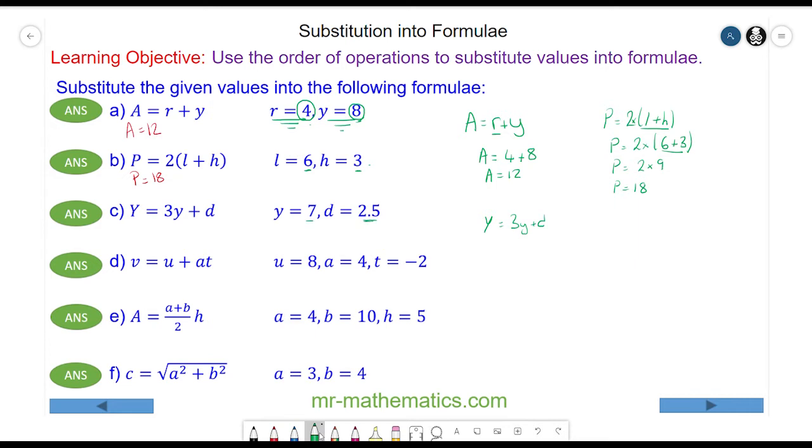So again we'll use the order of operations. We'll do the multiplication before the addition, so Y equals three times seven plus 2.5. Three times seven is 21 plus 2.5, so Y will equal 23.5.